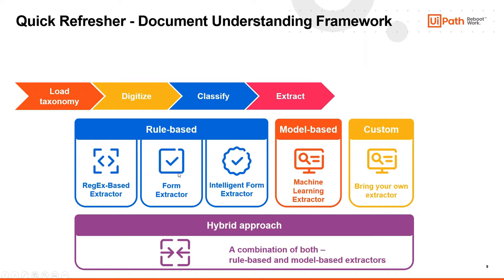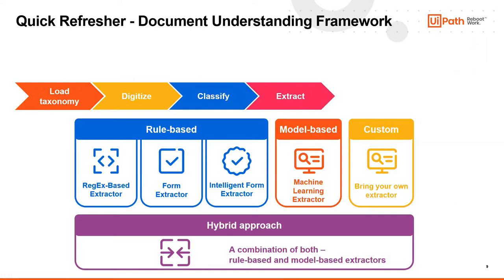You can combine different extractors at the field level. For example, for invoice number, if you see consistent patterns — say the number starts with four letters and ends with four digits — you can use the regex-based extractor for 80% of cases, and if confidence is low for the remaining 20%, it falls back to the machine learning extractor. This is what we call a hybrid approach. Intelligent form extractor handles handwritten documents, while the regex extractor has a wizard so you don't need regex familiarity.